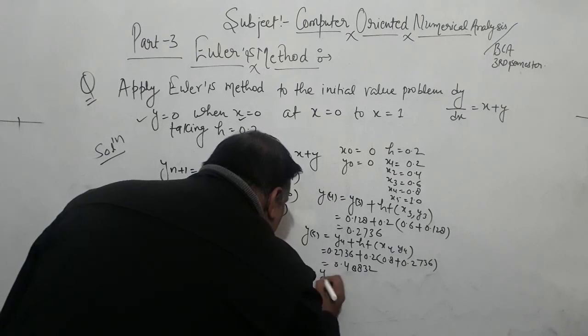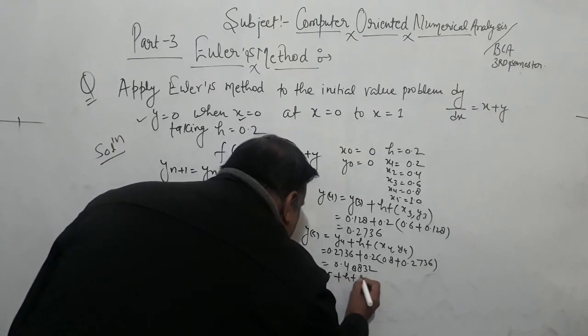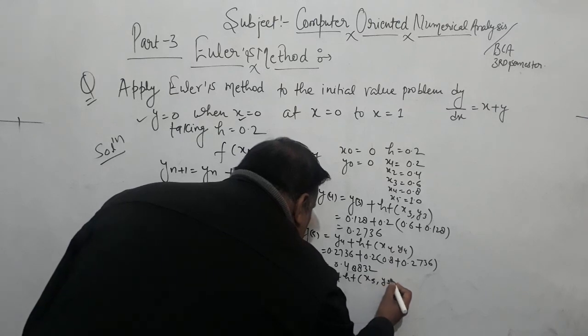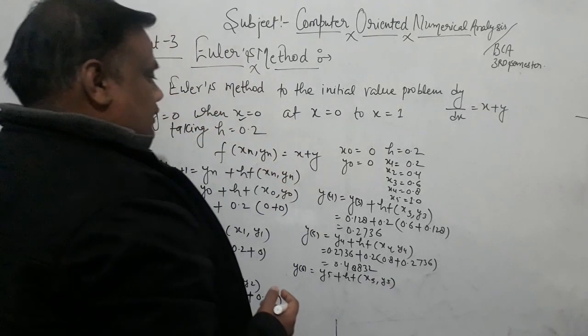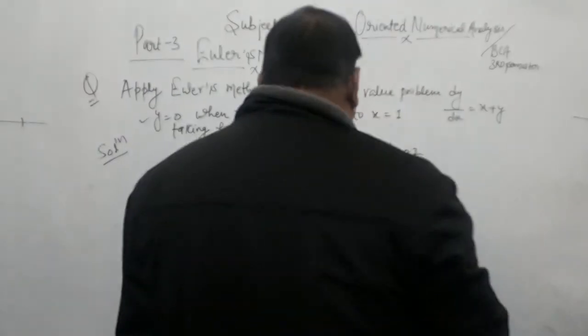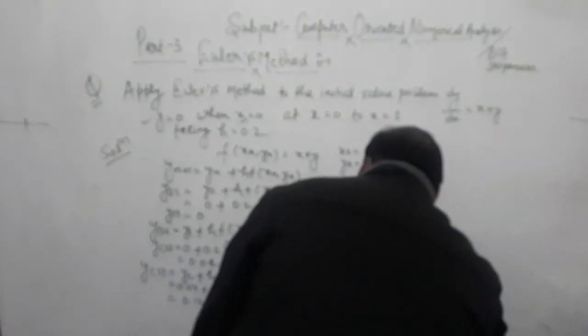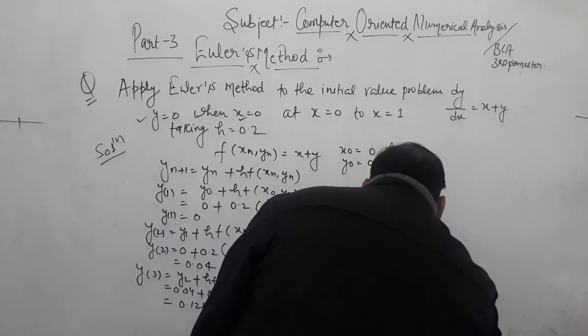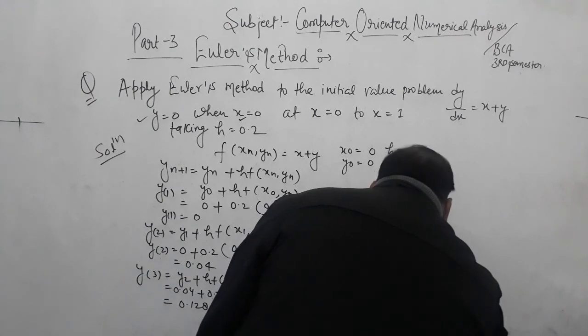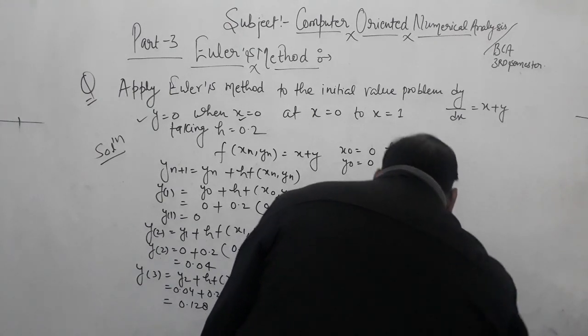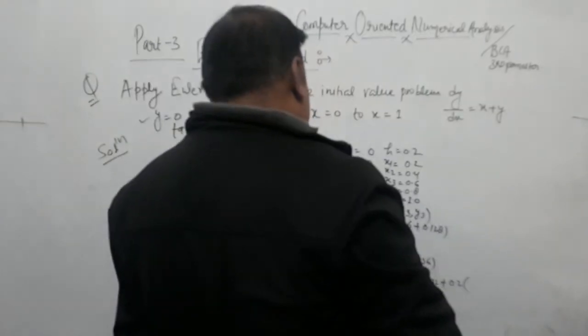y6 is equal to y5 plus h·f(x5, y5). y5 is 0.48832, plus h = 0.2, and x5 = 1.0, plus y5 = 0.48832.